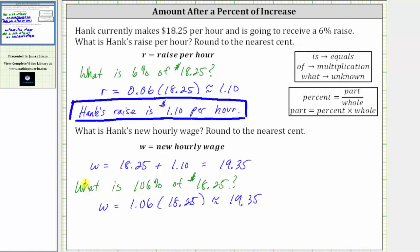Or again, as an equation: what represents the unknown, the variable W; is means equals; 106% is 1.06; of means multiplication, giving us times 18.25. Whichever method we use, we now know Hank's new hourly wage is $19.35 per hour.